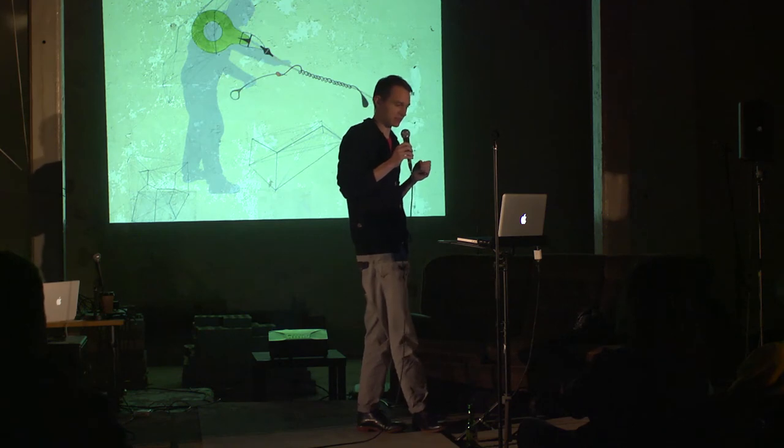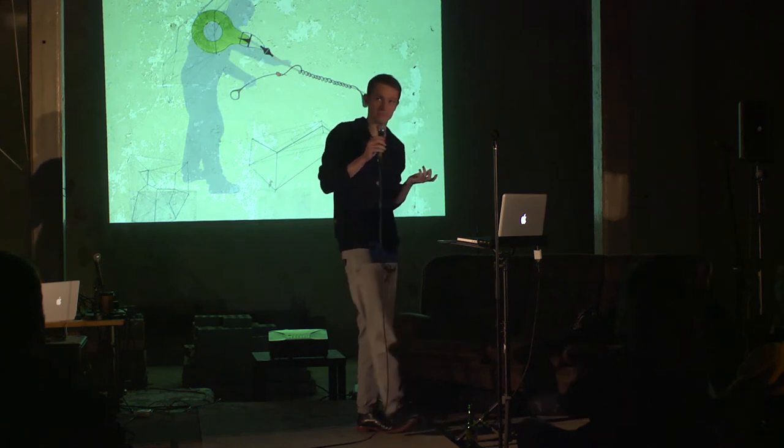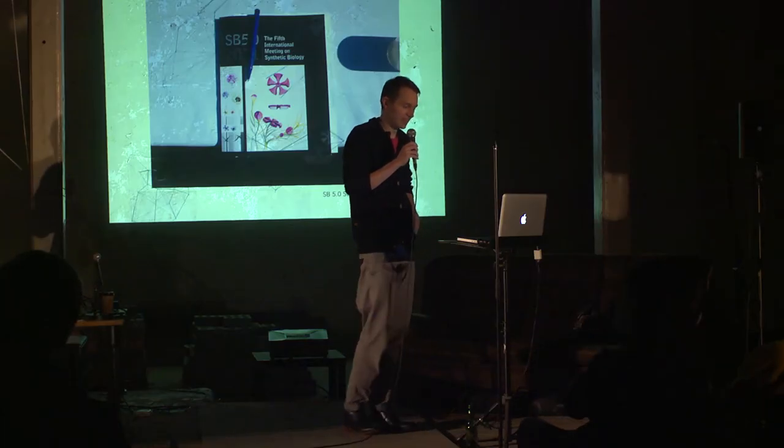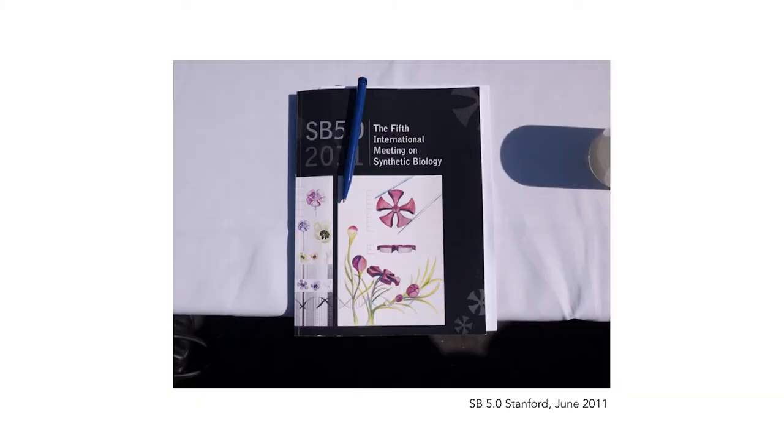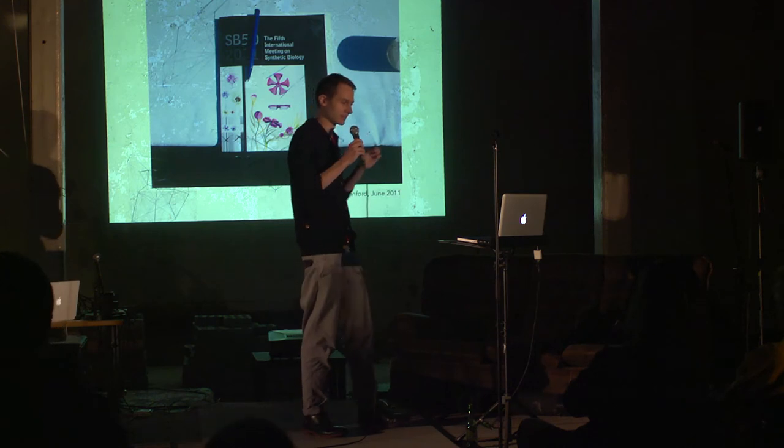Then a curious thing happened. Daisy works in a project called synthetic aesthetics, and we got invited to go to this conference at Stanford University called SB 5.0, which is the big synthetic biology meeting. The next one is going to be in London at Imperial next year. This was last year, and there we found that they had basically taken our work, or there was quite a clear connection, because the people who commissioned the conference are quite familiar with the project. It had in a very strange way influenced the imagination of the people actually working in these things.